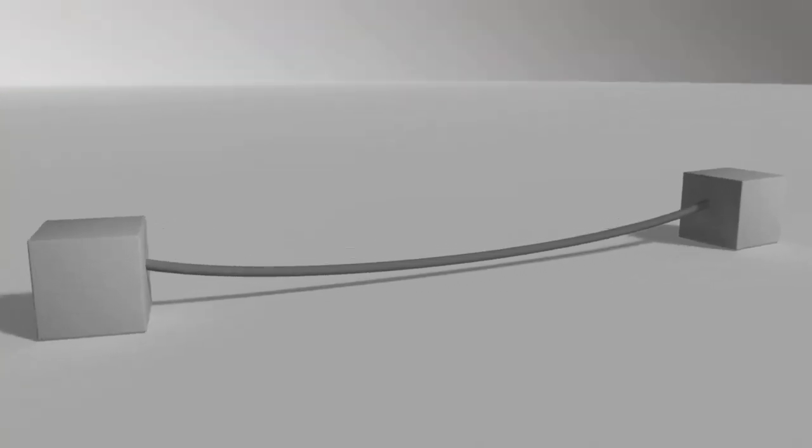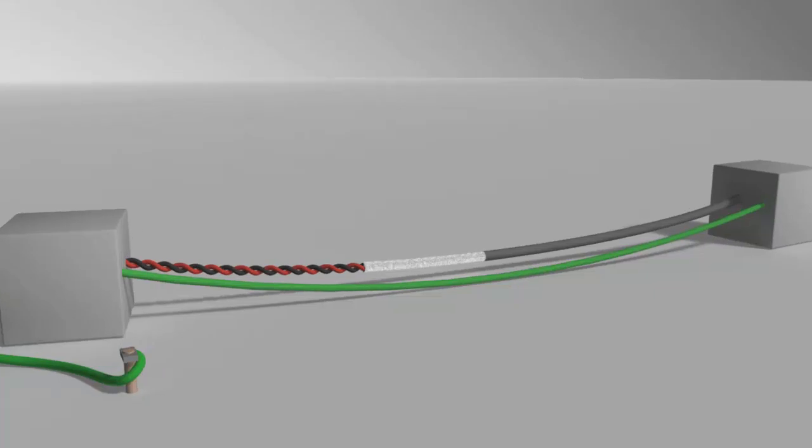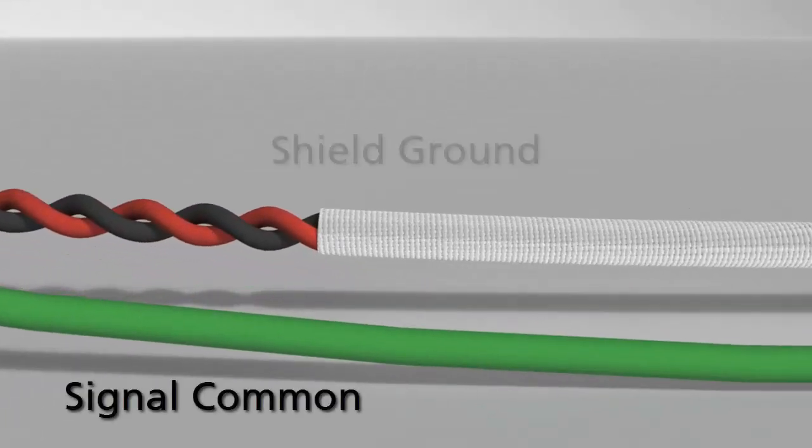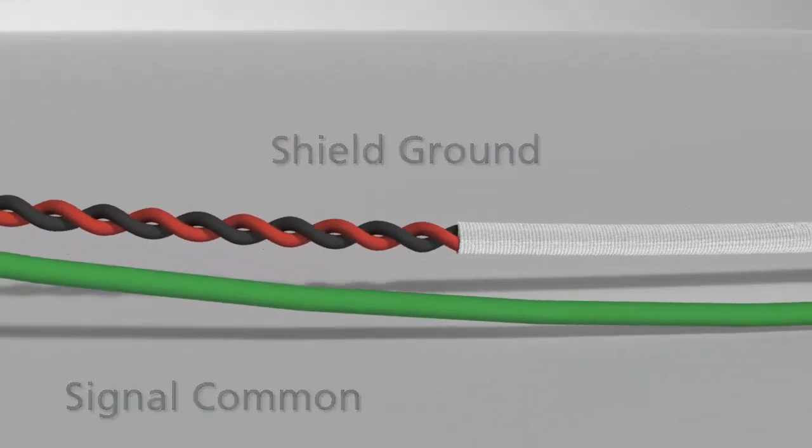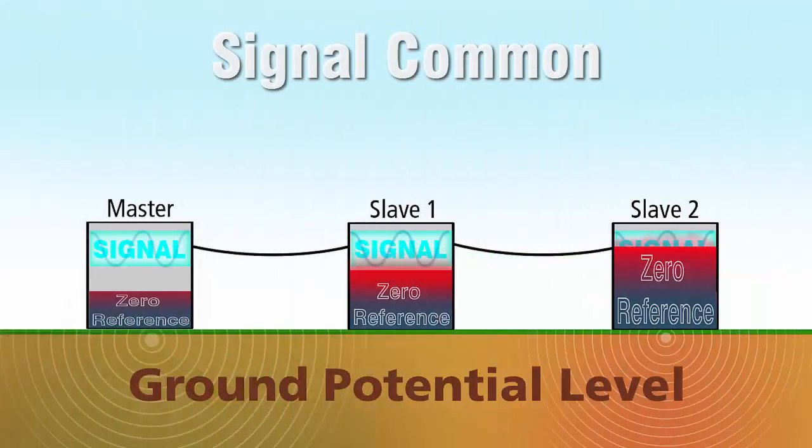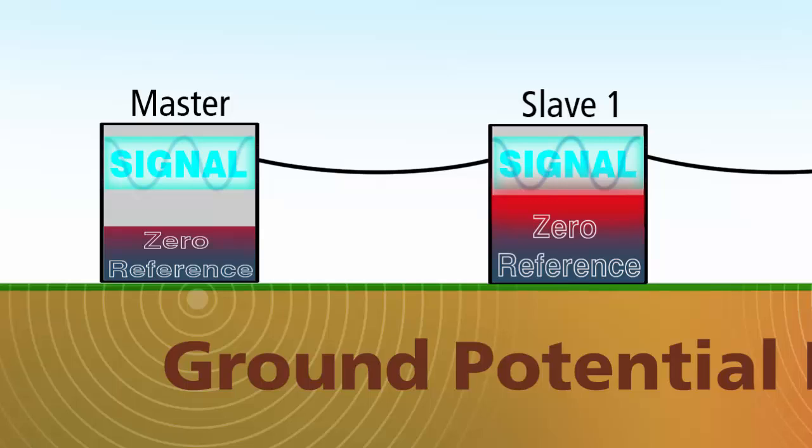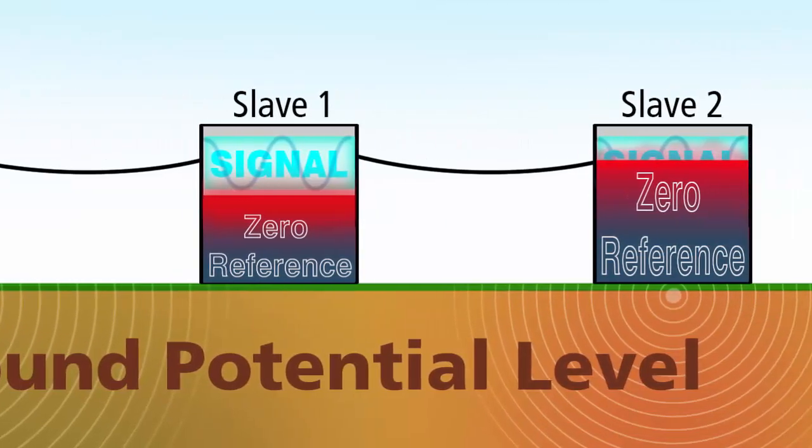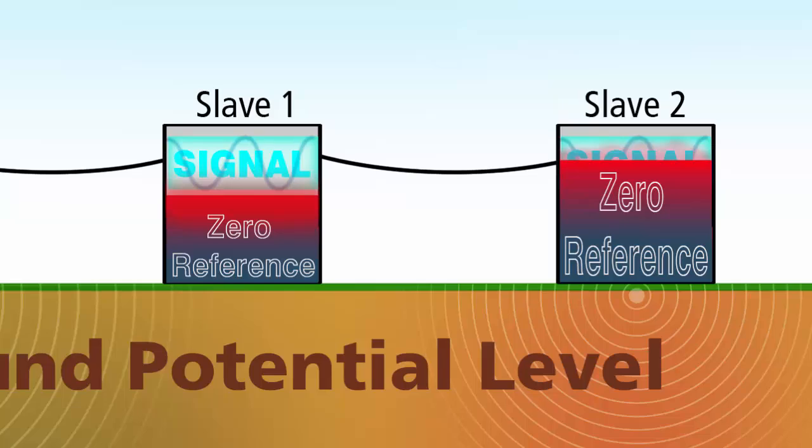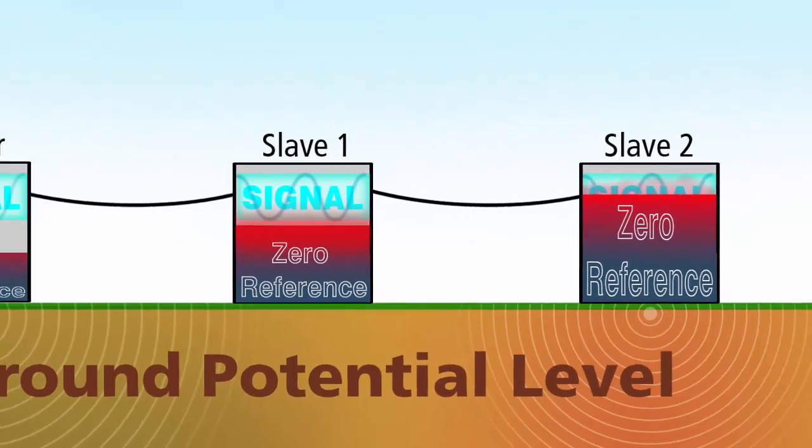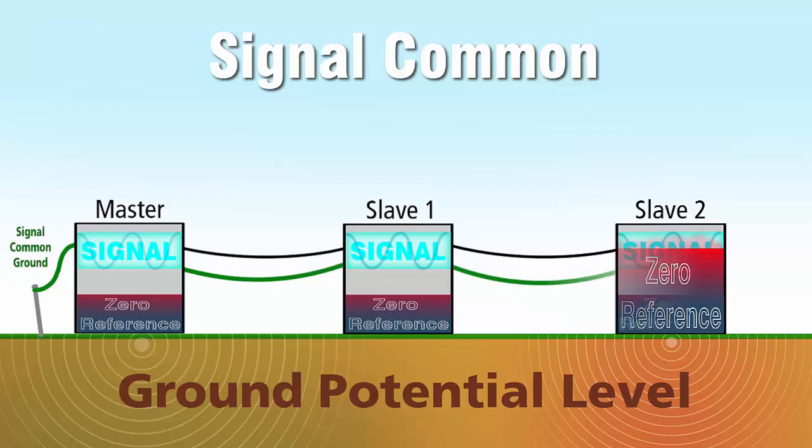To solve this problem, or at least fight against it, RS-485 networks utilize a signal common wire and a shield ground. The signal common wire runs, along with the signal wires, between each node on a network. It provides a common reference potential level for the RS-485 nodes, which otherwise carry floating voltages.